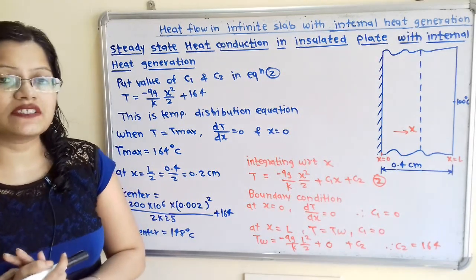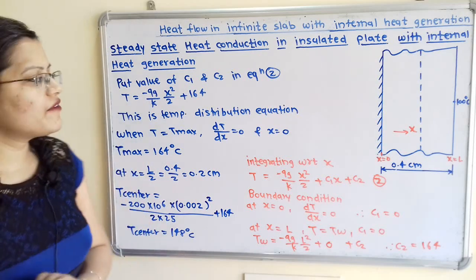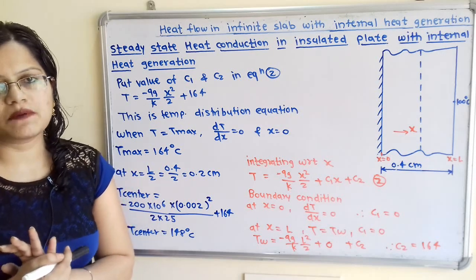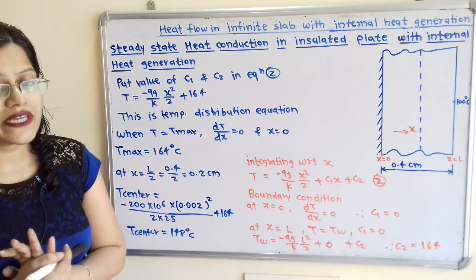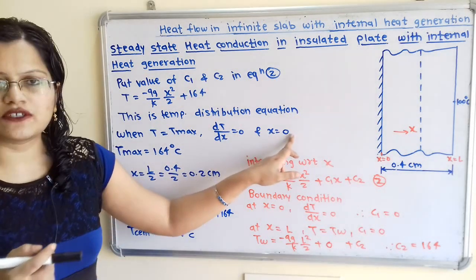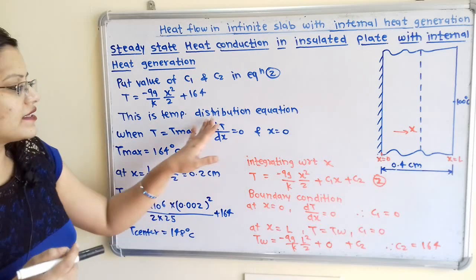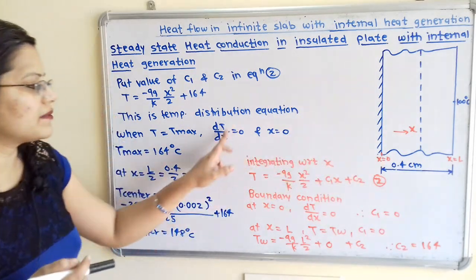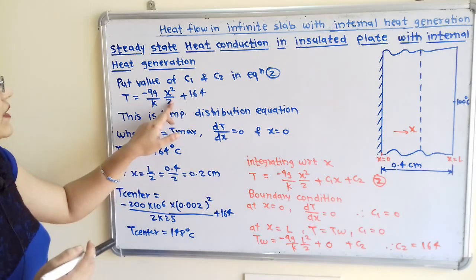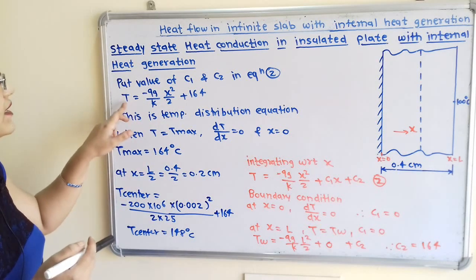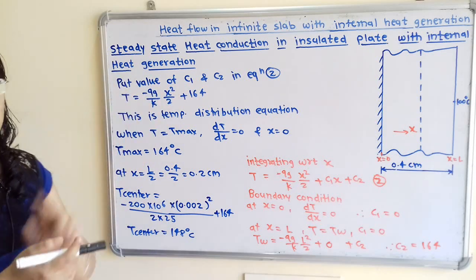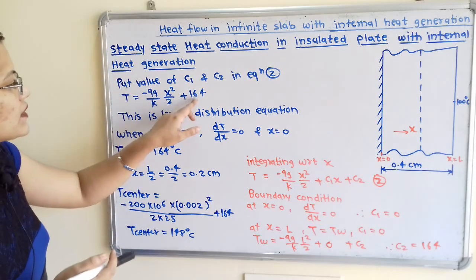Now we have two questions to answer. For the first question, we need to find the maximum temperature. The condition for maximum temperature is dT by dx equal to 0, which occurs at x equal to 0. Substituting x equal to 0 into the temperature distribution equation, the entire first term becomes zero. Therefore, T max is equal to 164 degree Celsius.